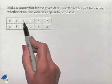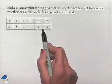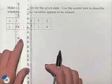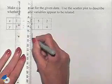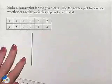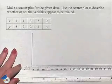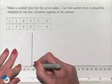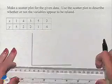So we have our x values given in the first row and our y values given in the second. We're going to make a scatter plot by drawing a first quadrant graph where we're going to put our x values along the horizontal axis and our y values along the vertical axis.